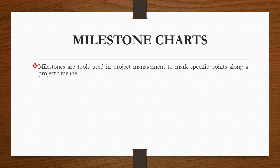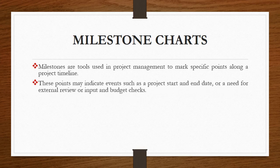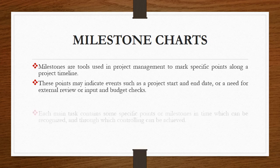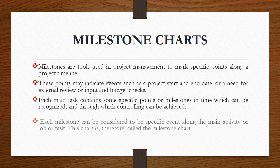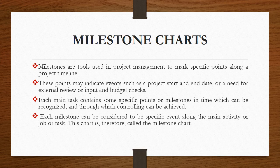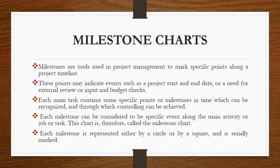The second method of scheduling is milestone charts. Milestones are tools used in project management to mark specific points along a project timeline. These points may indicate events such as project start and end date or a need for external review or input and budget checks. Each main task contains some specific points or milestones in time which can be recognized and through which controlling can be achieved. Each milestone can be considered to be a specific event along the main activity or job or task. This chart is therefore called milestone chart. Each milestone is represented either by a circle or by a square and is serially marked. So milestone chart is a chart which is made up of these milestones. Usually a milestone is in the shape of a circle or a square.